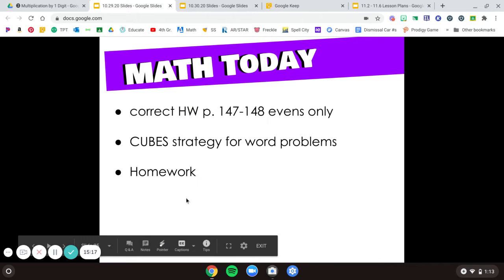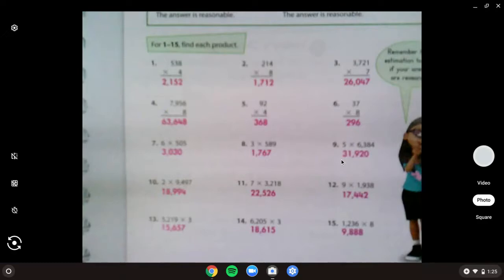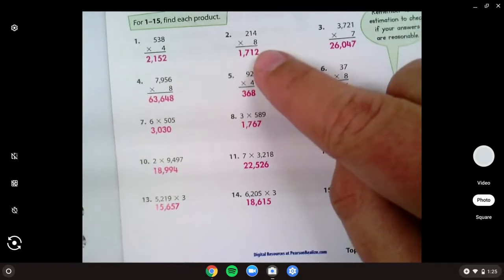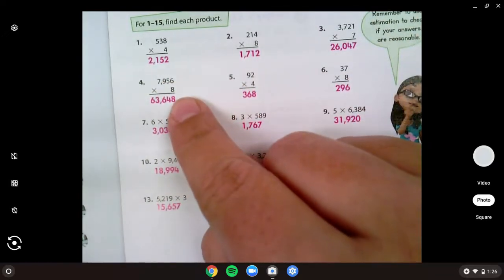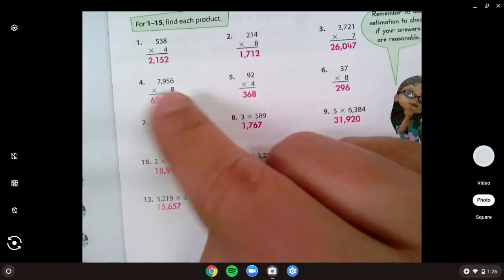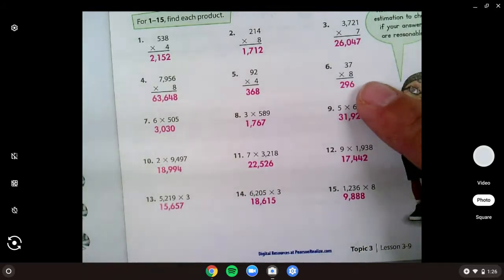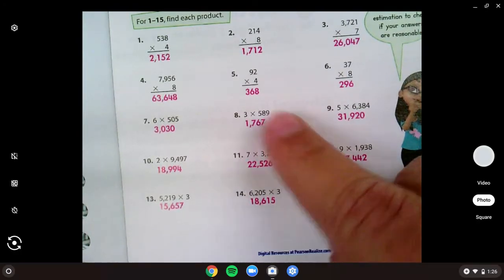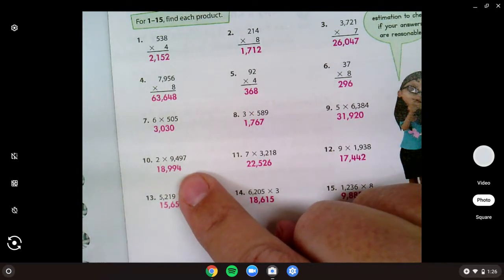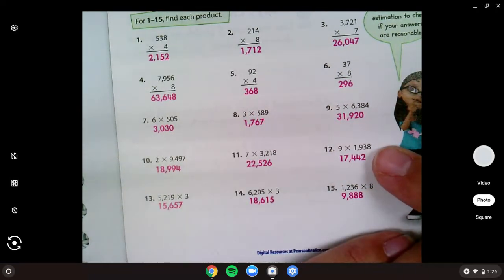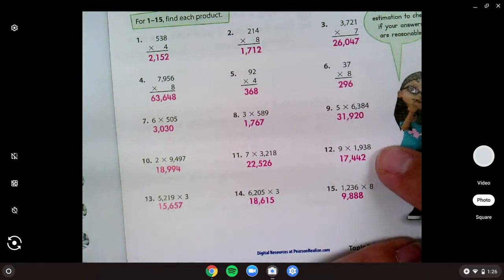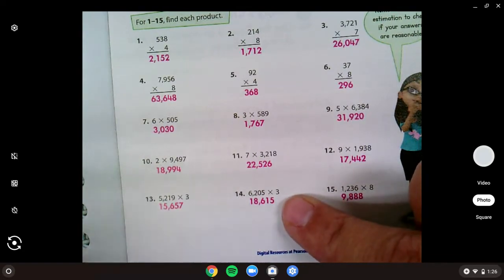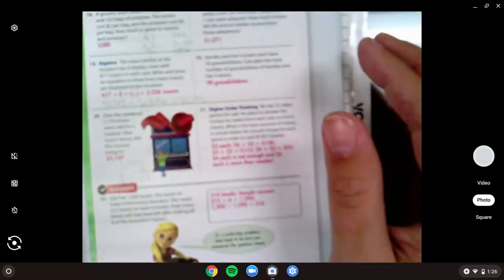All right, so we will correct our homework next, my friends online. So now we're going to look over our homework. Get your math book, the even numbers. Number 2 was 1,712. Number 4 was 63,648. Number 6 was 296. 8 was 1,667. 10 was 18,994. 12 was 17,412, or sorry, 442. And 14 was 18,615.